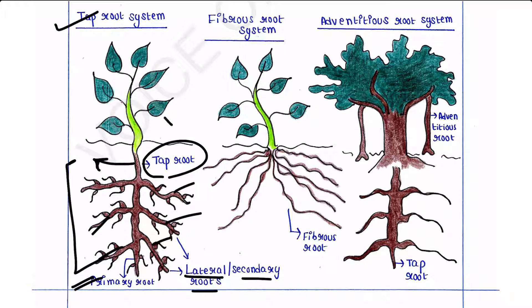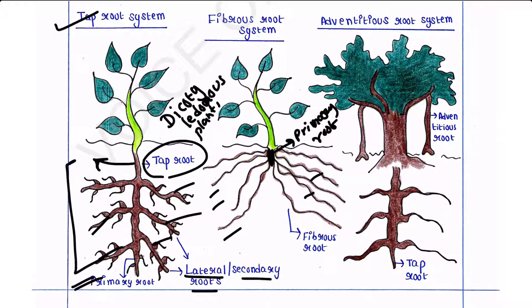Now what about the monocotyledons? In monocotyledon plants, the primary root is short-lived. First it had the primary root, but it was basically short-lived because it appears first from the seed then disappears. This primary root is replaced by a large number of roots like this. These roots originate from the base of the stem.